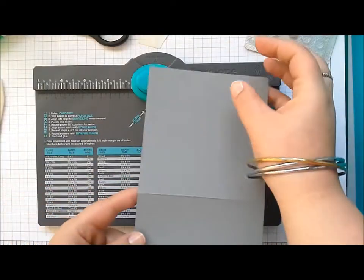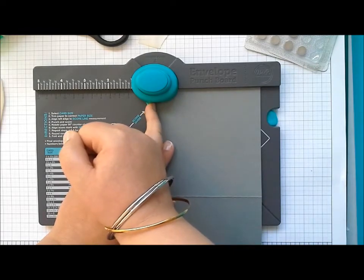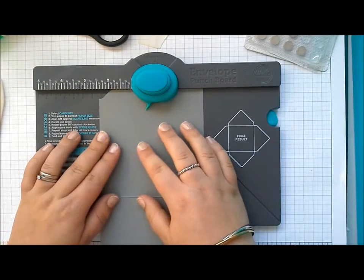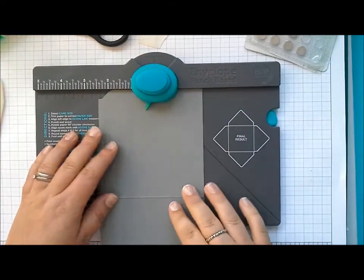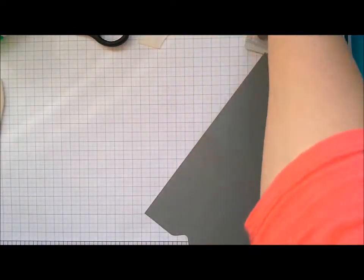Then we're just going to flip the card around and do the exact same thing. Line up on this inside edge of the punch, punch, move across to two and a half and punch. And that's it for the punch board for now. I'm just going to move those away.